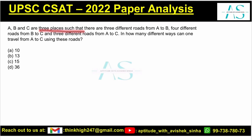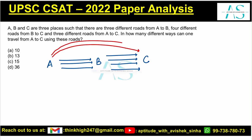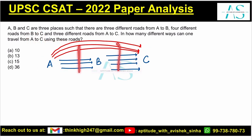A, B, and C are three places such that there are three different roads from A to B. Let's draw A and B here — one, two, three — and four different roads from B to C: one, two, three, and four. Next, three different routes from A to C directly. If I want to go, we have three different routes directly.